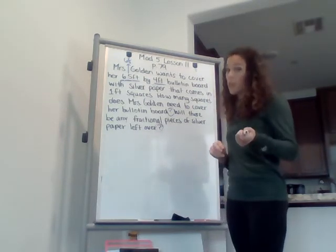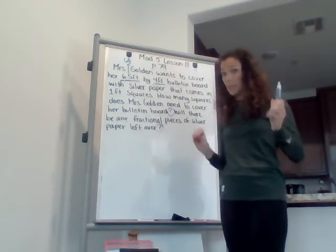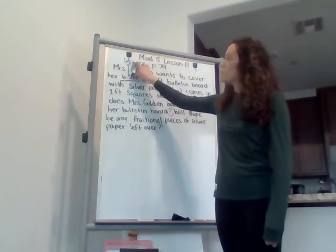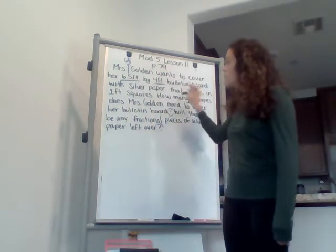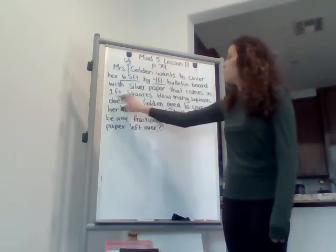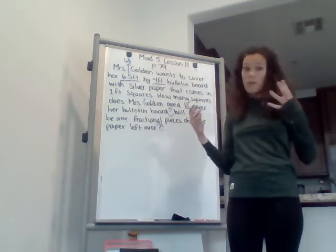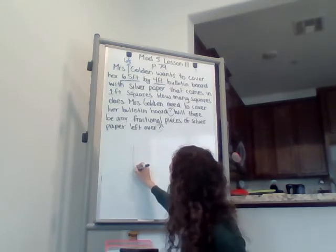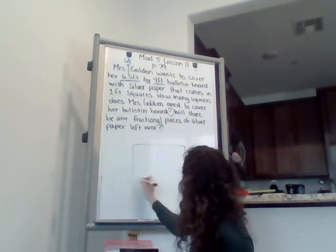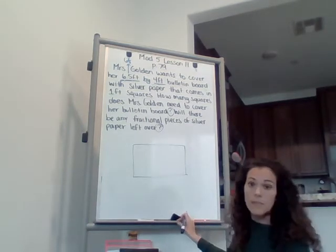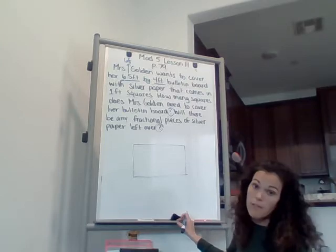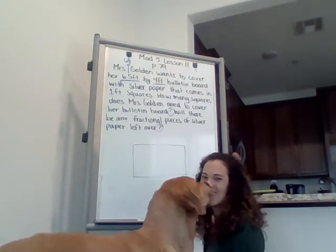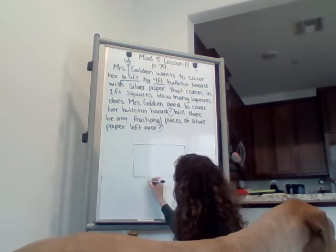You should have tried to solve it on your own. If you haven't, please pause and take the time to do that. Mrs. Golden wants to cover her 6.5 foot by 4 foot bulletin board with silver paper that comes in one foot squares. I love to draw my visual, so I'm going to start there. I'm going to draw a bulletin board — you might hear Charlie squeaking in the background, it's almost dinner.